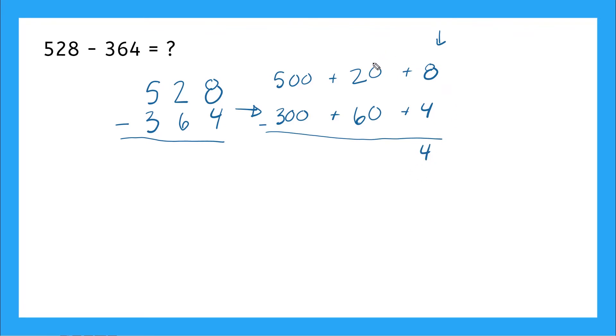And then I move over to my tens column here. And I have 20 minus 60. Can I do that? No, right? Because 60 is a bigger number than 20. I need my bigger number on top. So what do I do? Yeah, I'm going to go next door to my hundreds place. And I see I have 500 here.